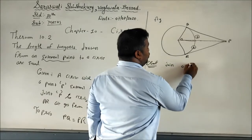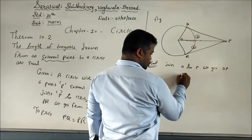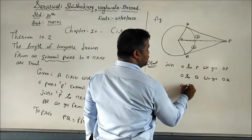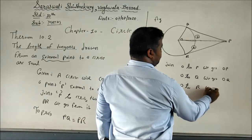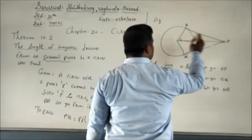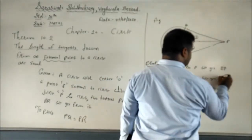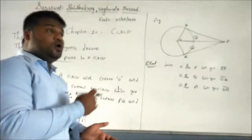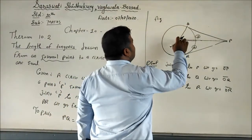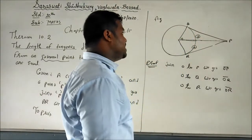For the proof, join O to Q — we get OQ. Join O to R — we get OR. Join O to P — we get OP. These are the construction steps. Now, from Theorem 10.1, we know that the radius to the point of contact is the shortest distance, meaning it is perpendicular to the tangent.